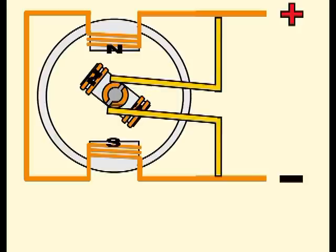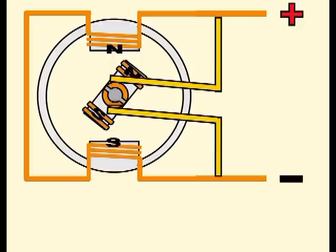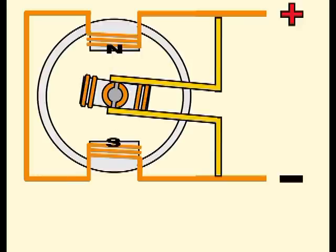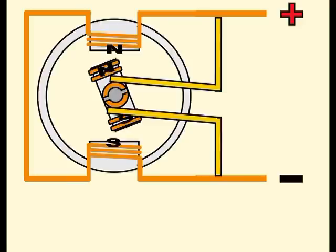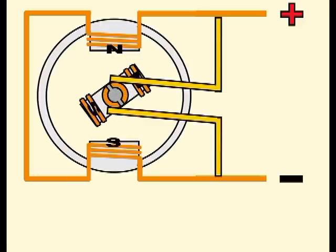If instead of using a battery we connect our motor to a source of alternating current, the result will be the same, since what really makes it work is the relative polarity between the magnetic field of the stator and the magnetic field of the rotor.